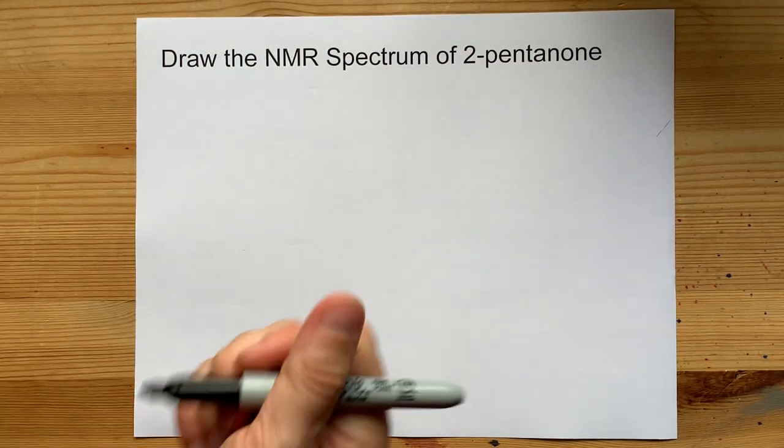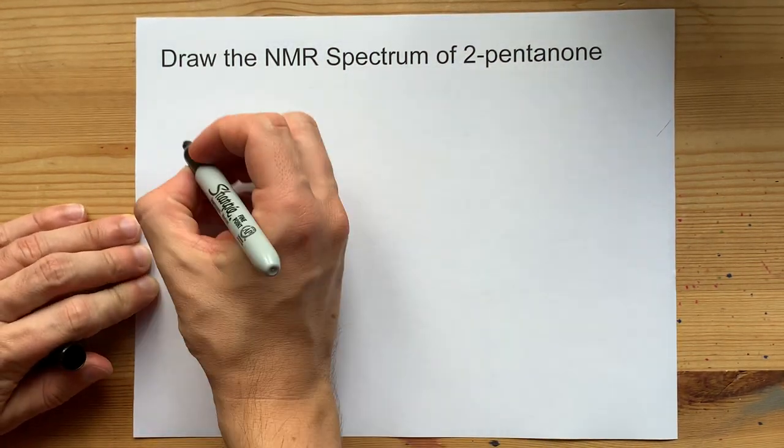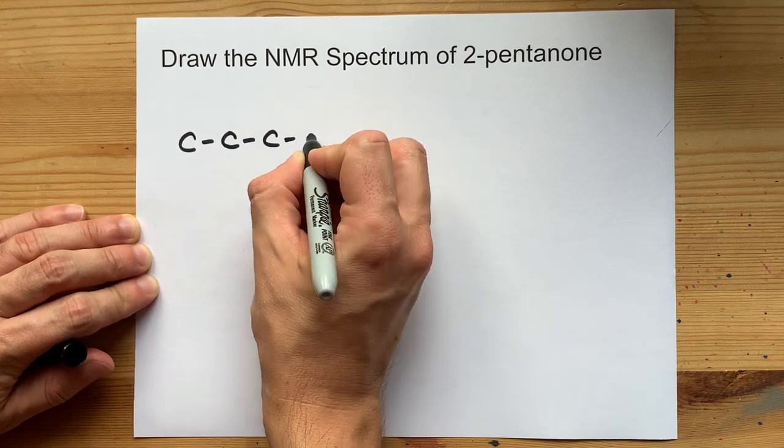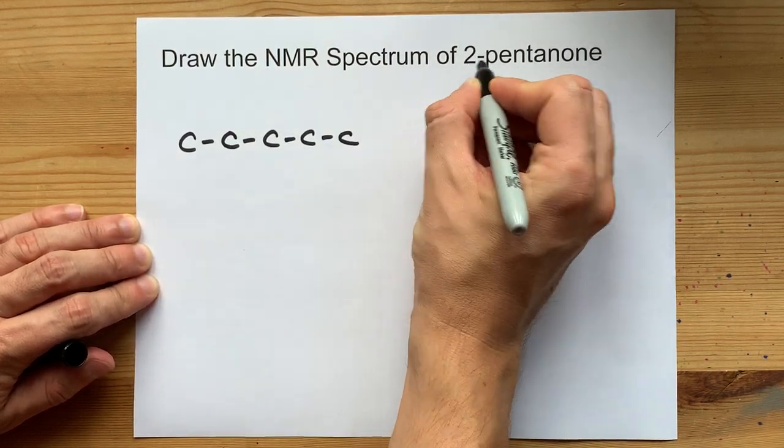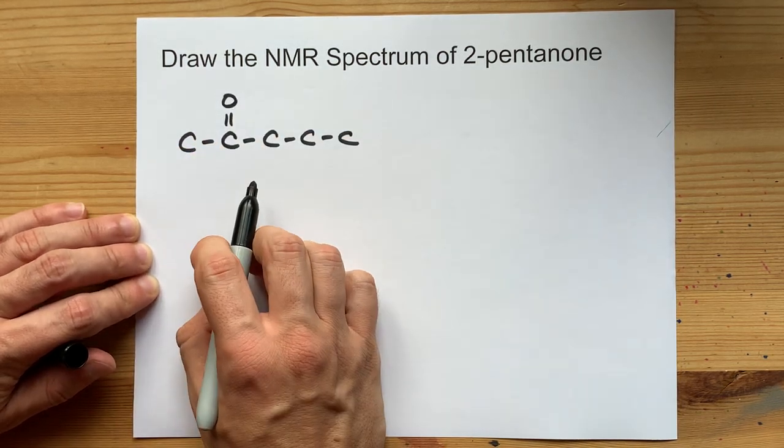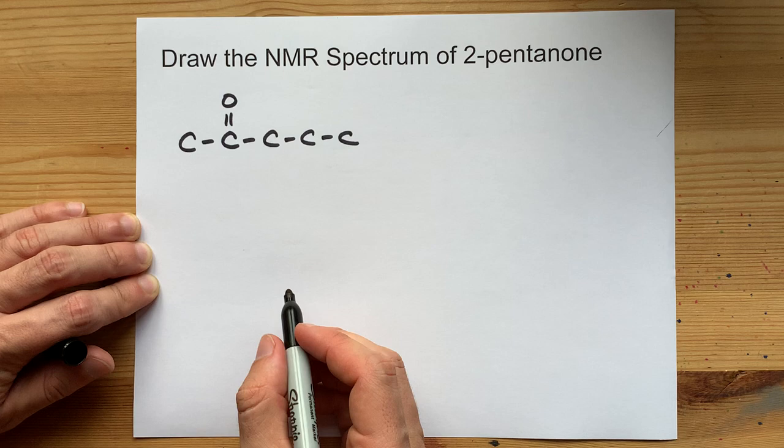Let's draw the NMR spectrum of 2-pentanone. Now the pent means we have 5 carbons in a row, and the 2-one means that it is a ketone with a double bonded oxygen on the second carbon.